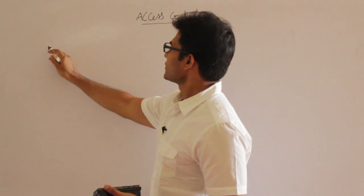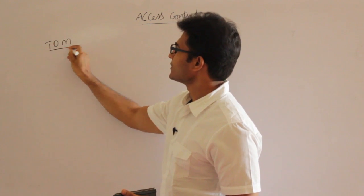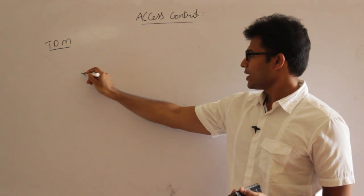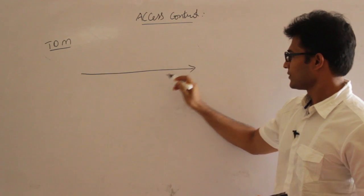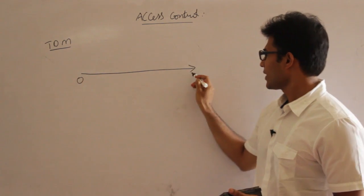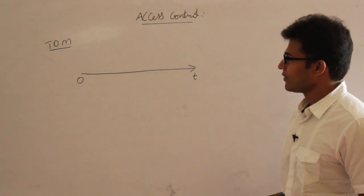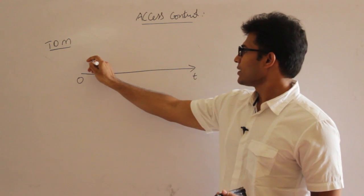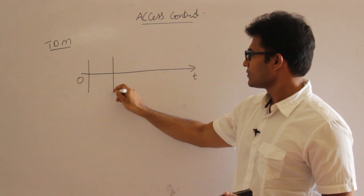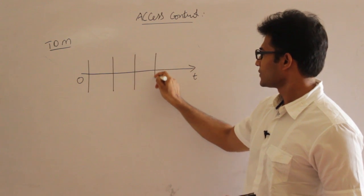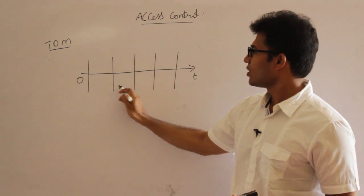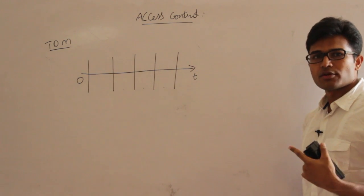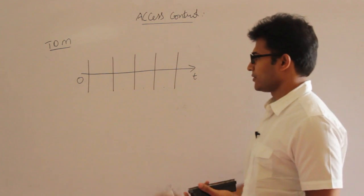The first method is TDM — Time Division Multiplexing. This is the simplest access control method. Assume this is the timeline; time starts at 0 and increases. What this method says is: divide the entire time into something called slots.